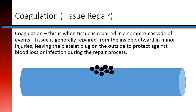Coagulation, or tissue repair. This is when the tissue is repaired in a complex cascade of events. The tissue is generally repaired from the inside outward in minor injuries, leaving the platelet plug on the outside to protect against blood loss or infection during the repair process.